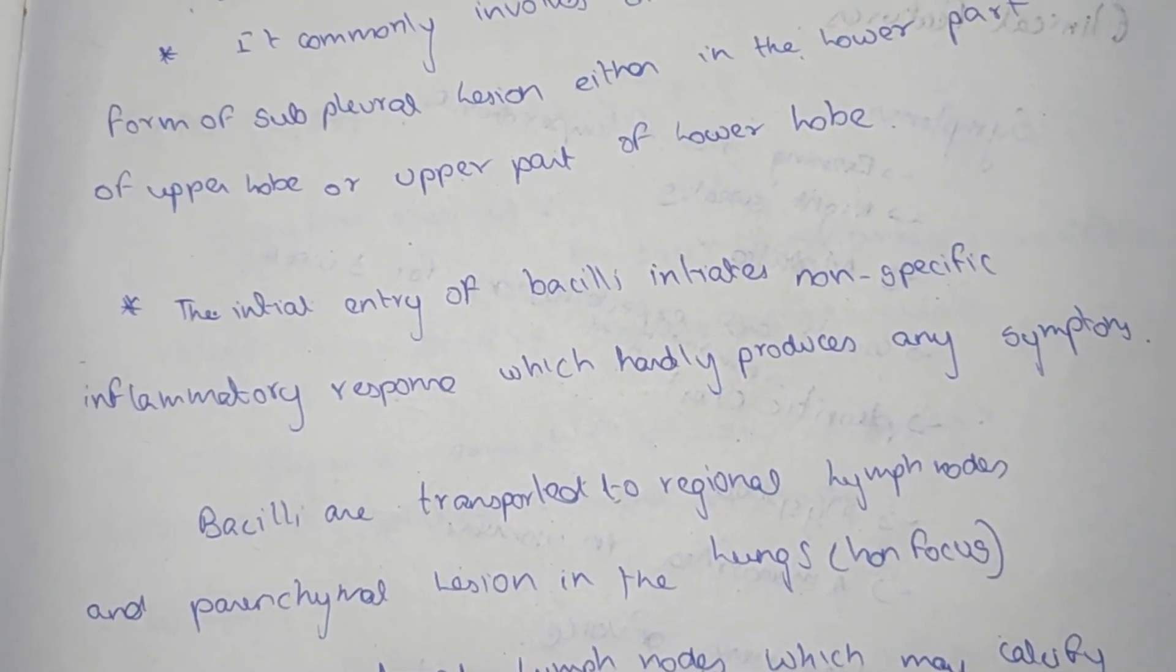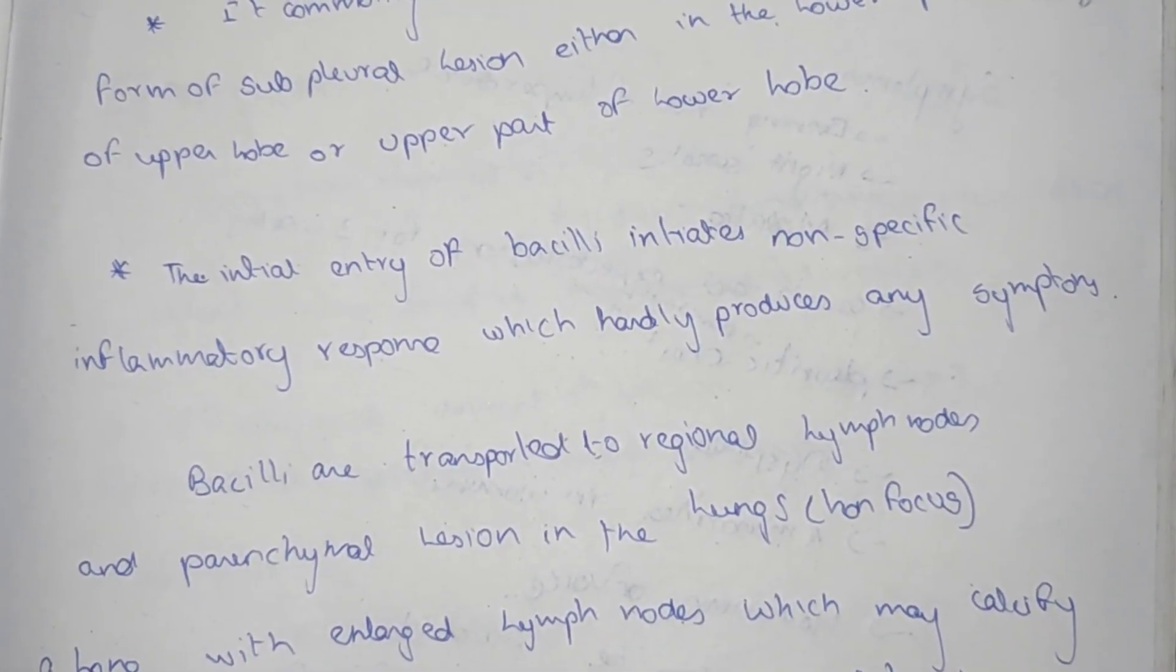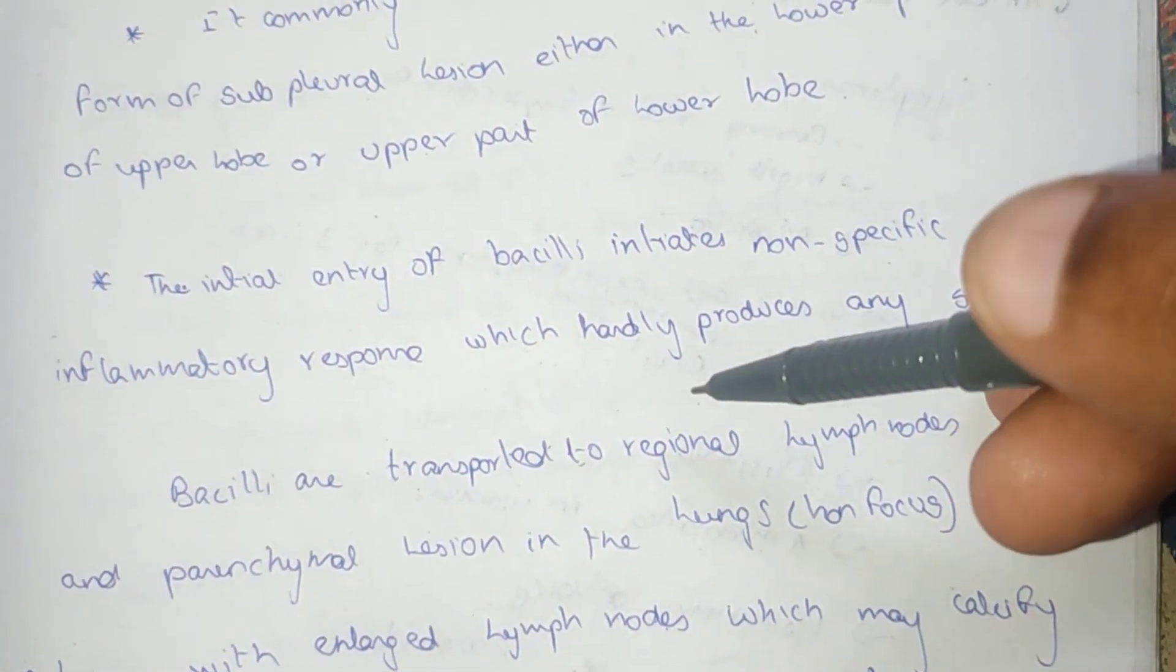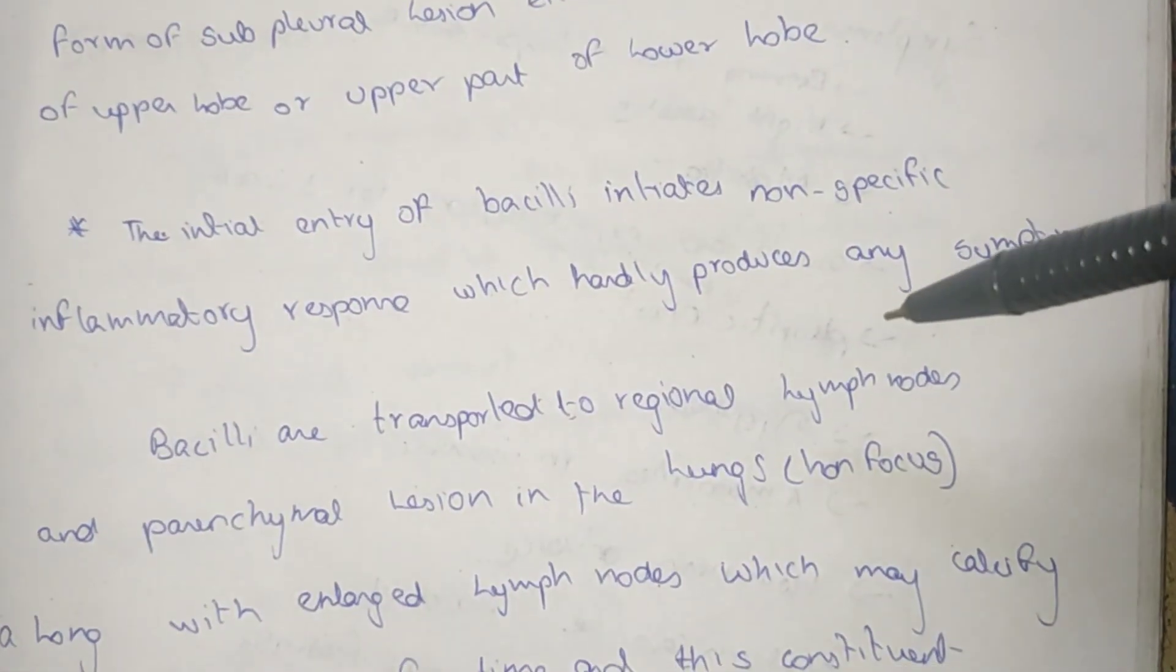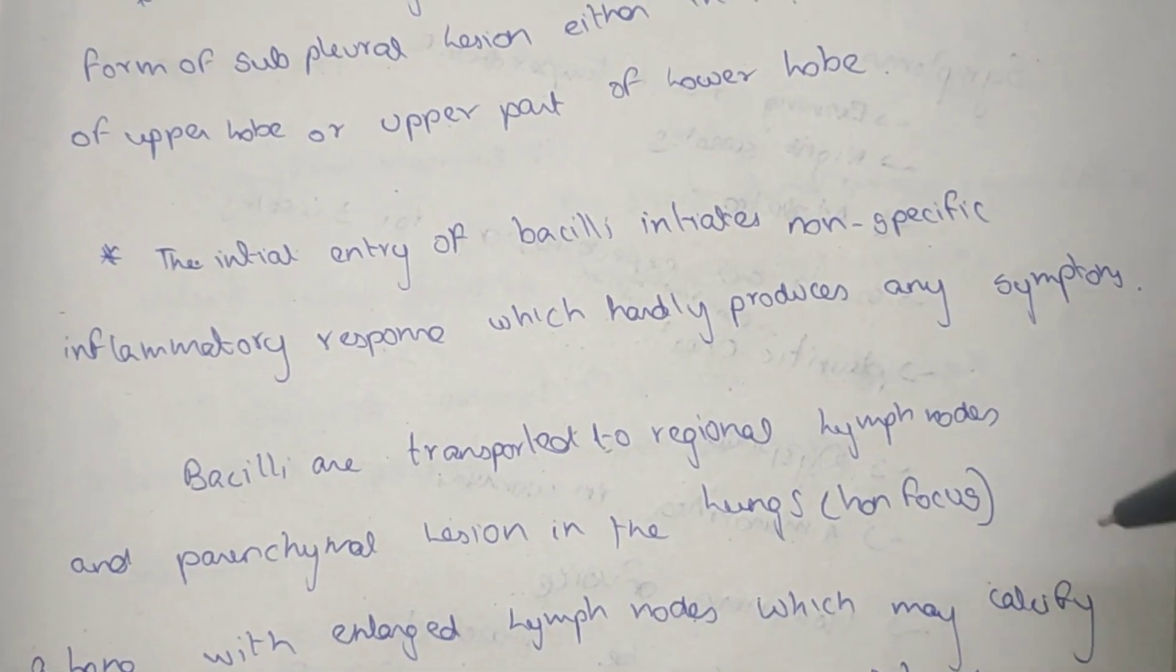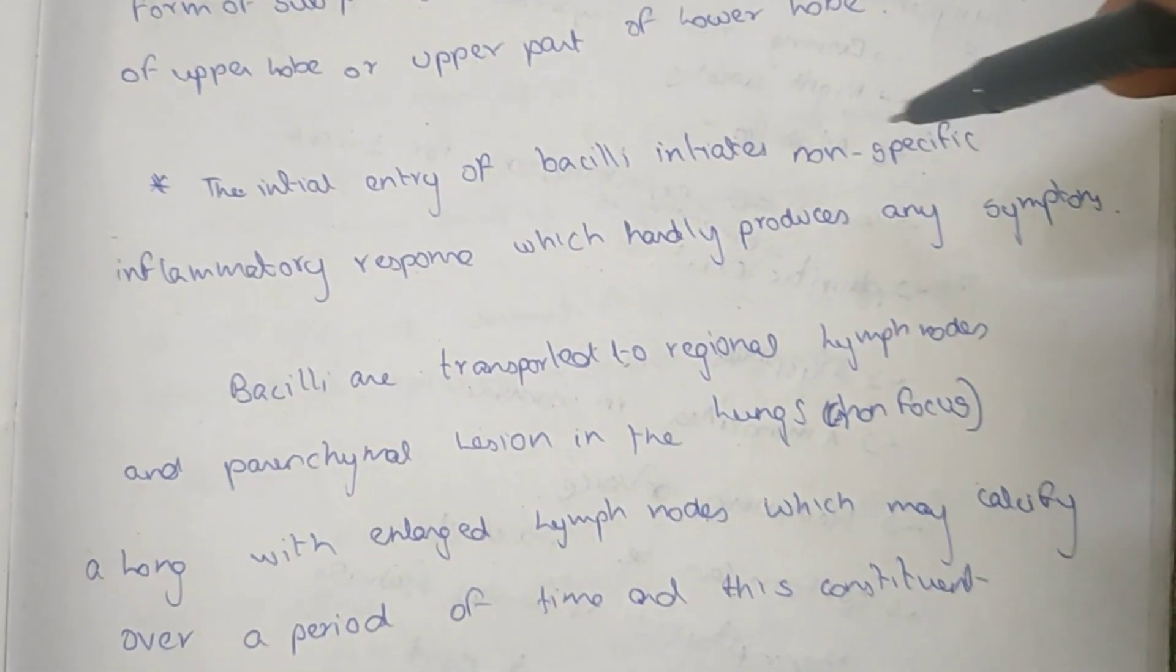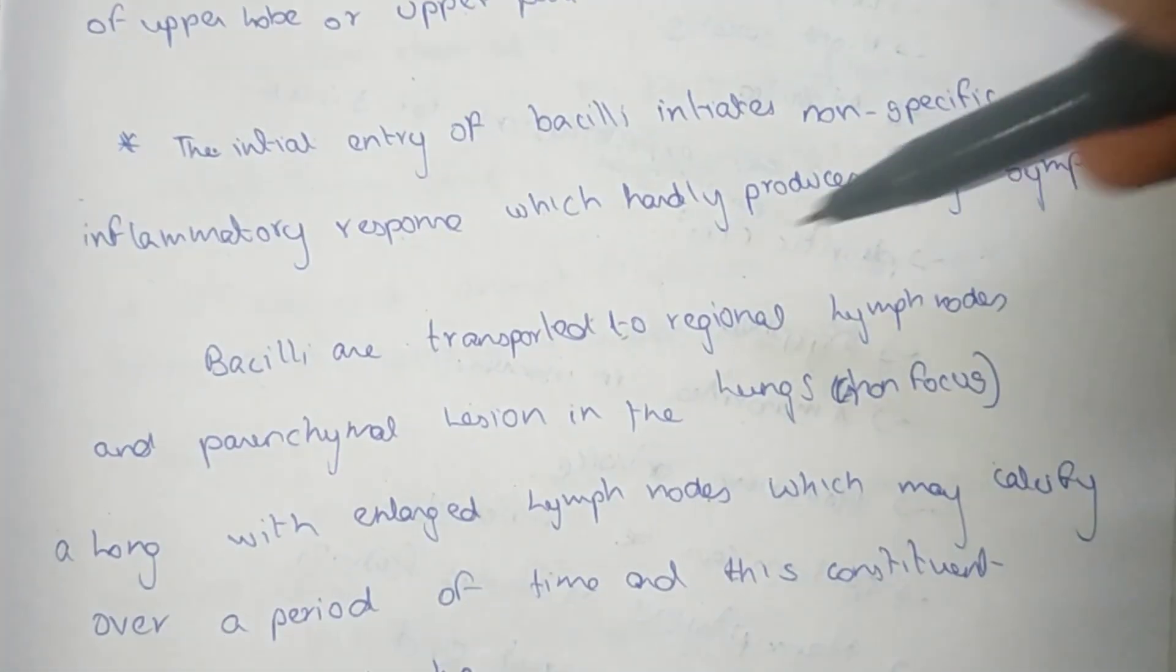The initial entry of the bacilli initiates a non-specific inflammatory response which hardly produces any symptoms. Bacilli are transported to the regional lymph nodes and parenchymal lesion in the lung. That is called Ghon focus.